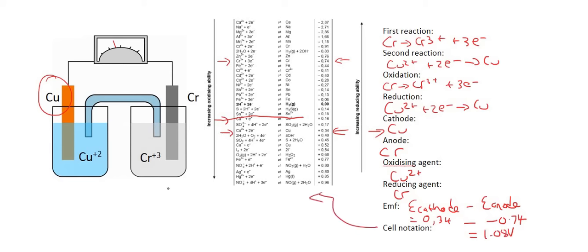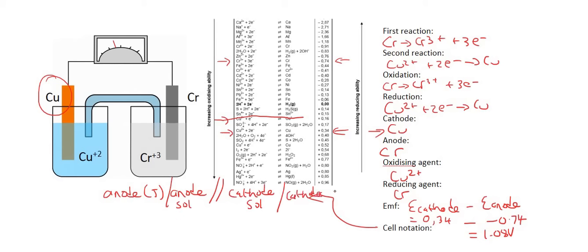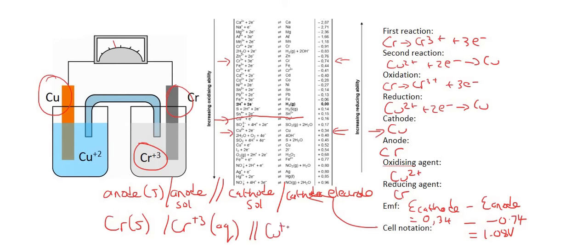Cell notation — we know that's always the anode electrode first, then the solution, then the cathode solution, then the cathode electrode. So the anode is our chromium — Cr in the solid phase. Then the liquid will be Cr3+ in the aqueous phase. Then we've got Cu2+ which is aqueous. And then we've got copper, which is in the solid phase. And that's it, guys — I'm sure by now you're doing just fine with these galvanic cells. Thanks for watching.